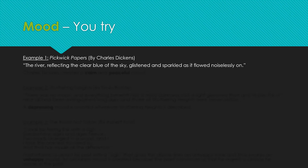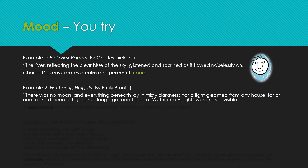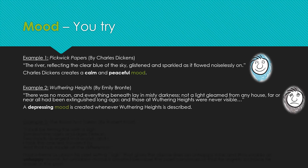Now you try — we're going to look into three examples and think about what the mood is. Example 1 is from Pickwick Papers by Charles Dickens: 'The river, reflecting the clear blue of the sky, glistened and sparkled as it flowed noiselessly on.' Charles Dickens creates a calm and peaceful mood. Example 2 from Wuthering Heights by Emily Brontë: 'There was no moon and everything beneath lay in misty darkness. Not a light gleamed from any house, far or near, all had been extinguished long ago, and those at Wuthering Heights were never visible.' She is creating a depressing mood whenever Wuthering Heights is described.